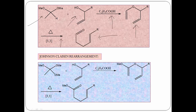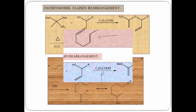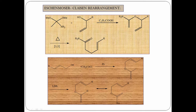In Johnson Claisen rearrangement, one hydrogen is replaced with an O-methoxy group. This compound is treated with allyl alcohol in the presence of acid to give an intermediate, which undergoes Claisen rearrangement to give alpha-beta, gamma-delta unsaturated esters. In Eschenmoser-Claisen rearrangement, one hydrogen is replaced with NR₂. After treatment with allylic alcohol, ketal, and acid, the product undergoes Claisen rearrangement to give alpha-beta, gamma-delta unsaturated amides.